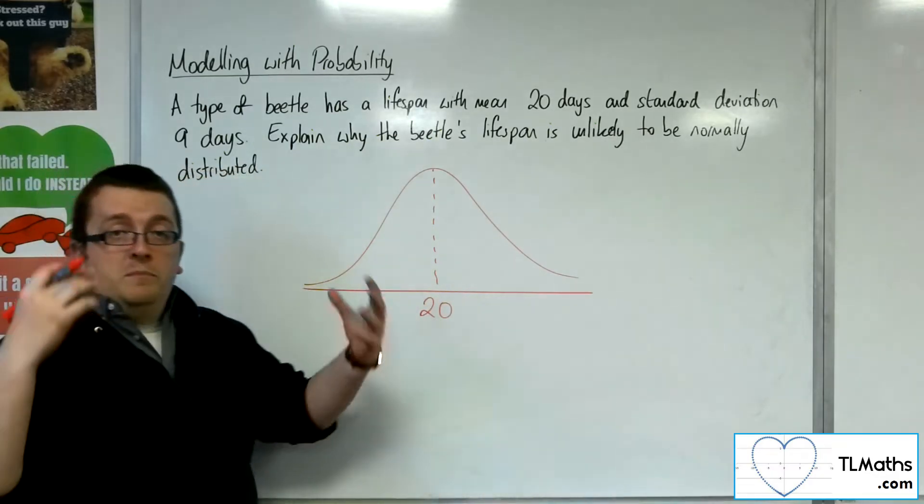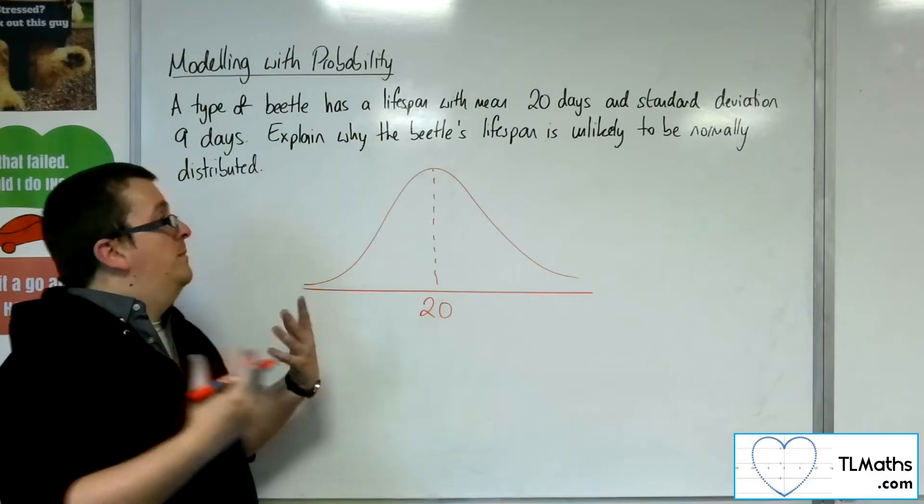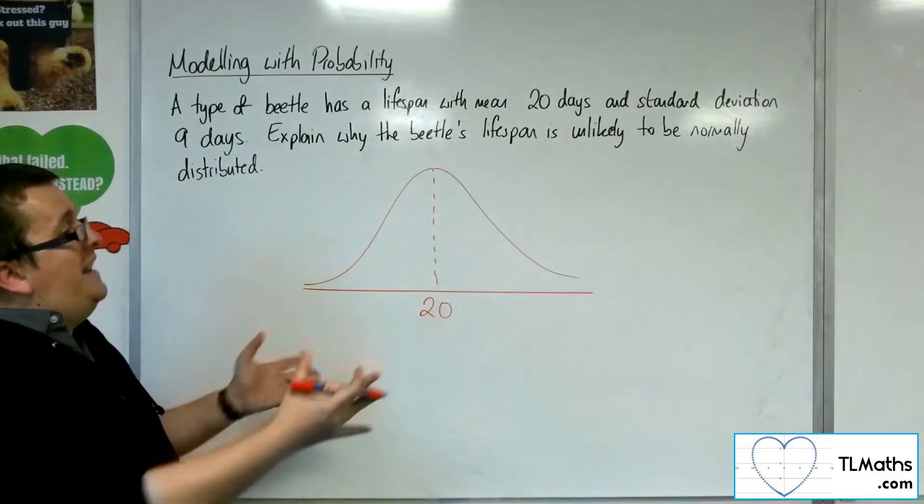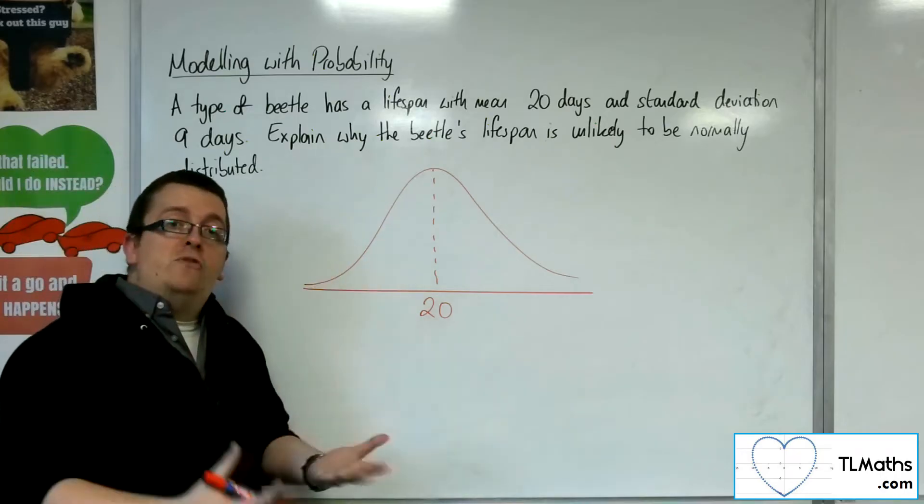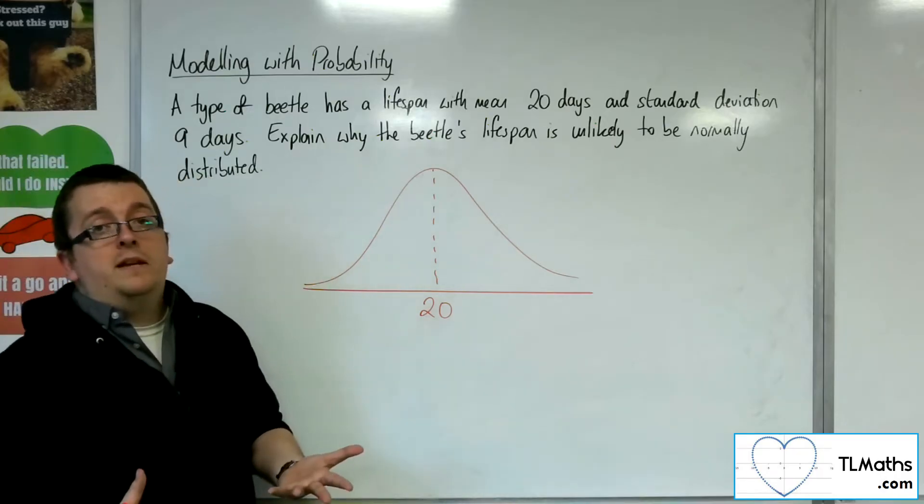Then we know that the majority of the information, the majority of the ages of this beetle, are going to be within three standard deviations of the mean, and that covers 99% of the data.